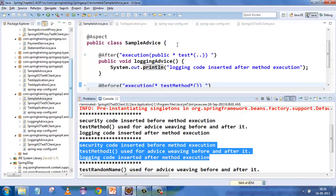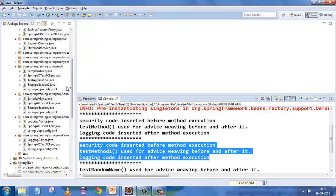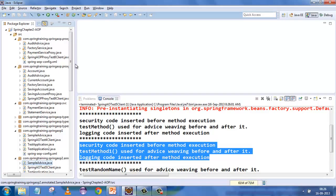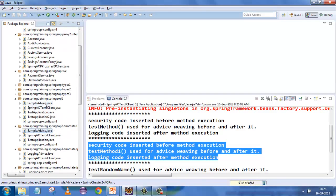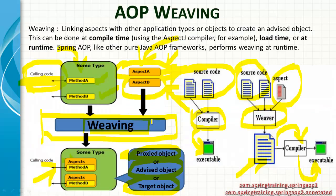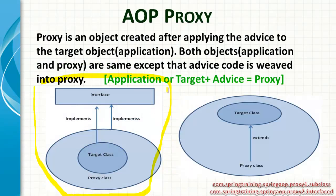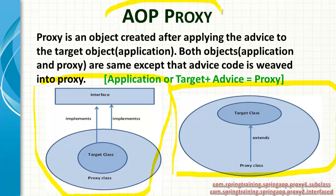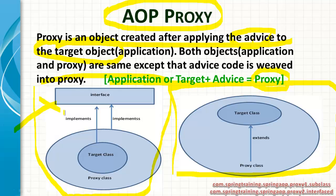We have seen two ways of doing aspect-oriented programming. Now we need to understand how the weaving is happening. Weaving happens in two ways: the first is the interface way, and the second is the inheritance way. Everything in AOP is done through a proxy. A proxy is an object created after applying advice to the target object — when you combine advice and the target object, you get a proxy.